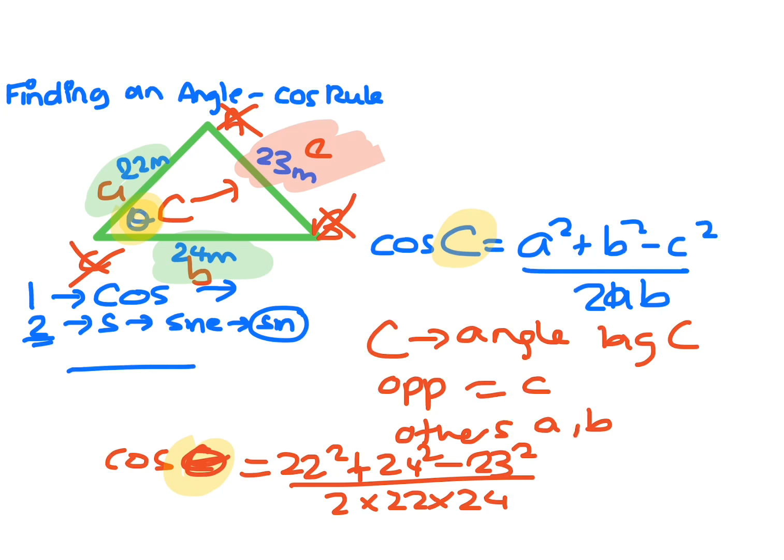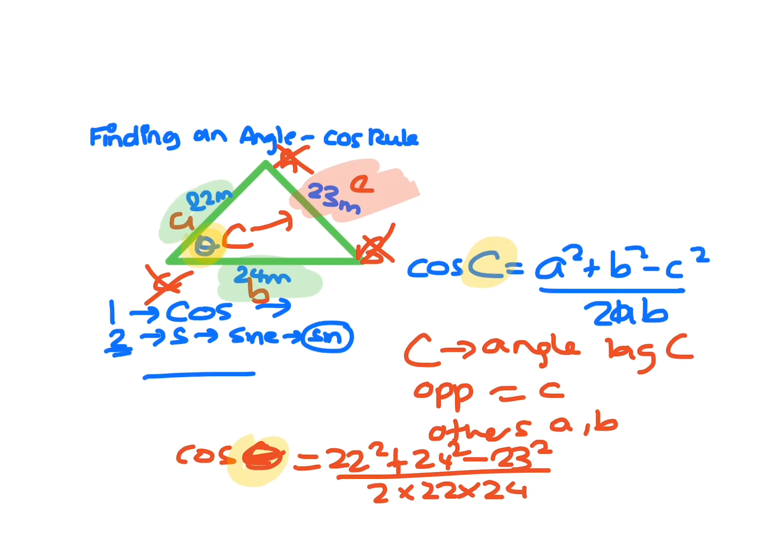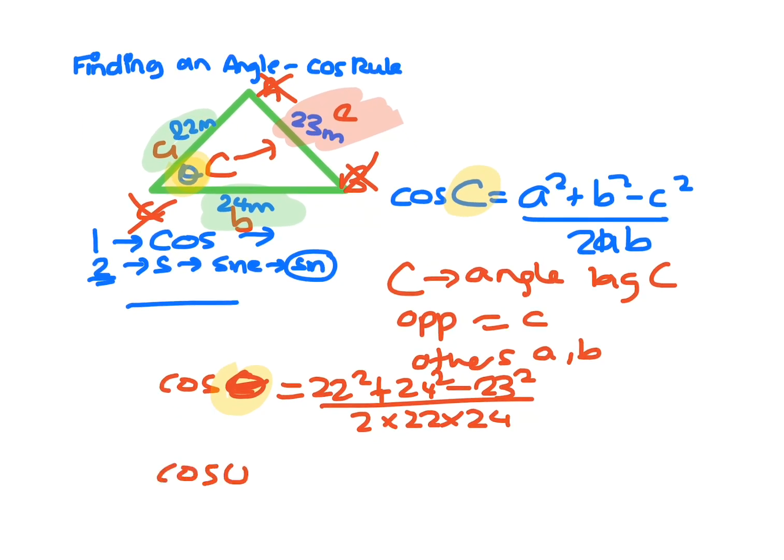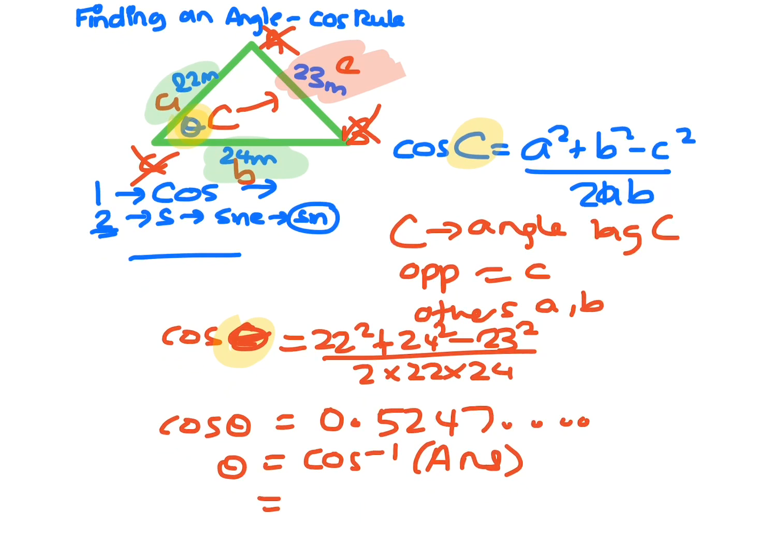Okay, so putting everything into the calculator, you get the fraction button and then go 22 squared plus 24 squared minus 23 squared, all over 2 times 22 times 23. And you end up with cos theta equals 0.5247 dot dot dot. So to get theta, you go cos to the minus one of what that answer is. So you go shift cos equals, and we end up with 58 degrees.